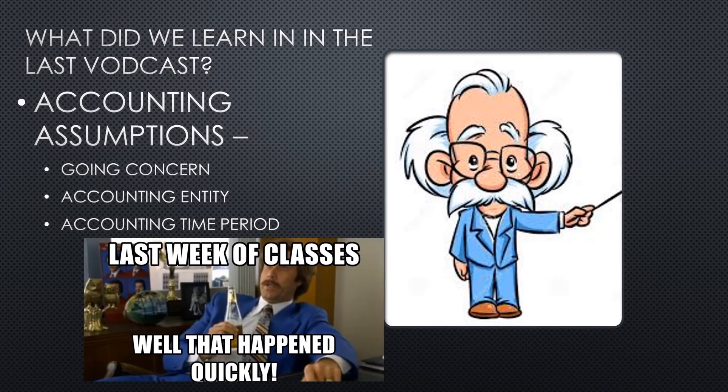From last week's vodcast, where we concentrated on accounting assumptions — those being the accounting entity and accounting time period — this information will be assessed under the describe objective, so it will be a short answer question. Analyzing company financial reports, and in particular the statement of profit or loss and the statement of financial position, will be examined under the analyzing objective.